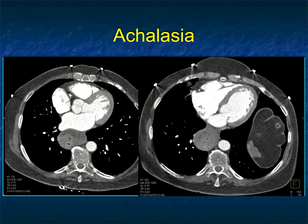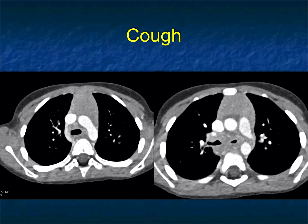Achalasia. Achalasia: dilated esophagus, lots of food and fluid. Often achalasia presents with aspiration, can present with pneumonia, can present with an underlying tumor. Sometimes it presents with chest pain, and in this case it presents as if the patient might be having a dissection — an important differential point.